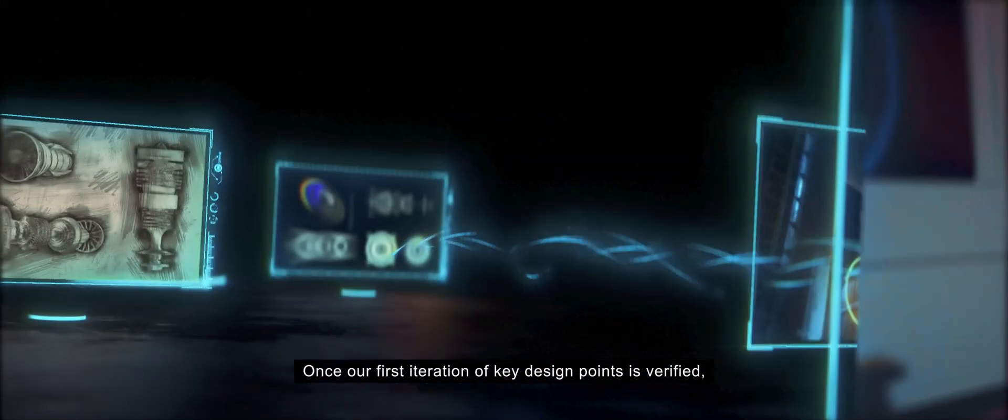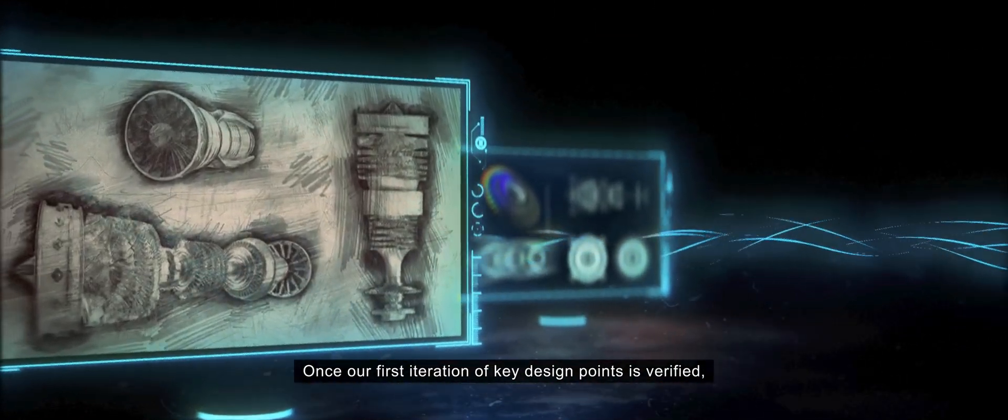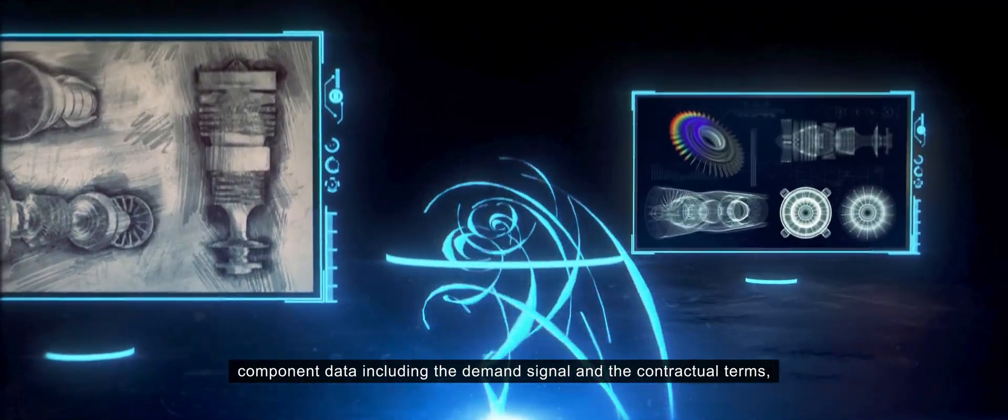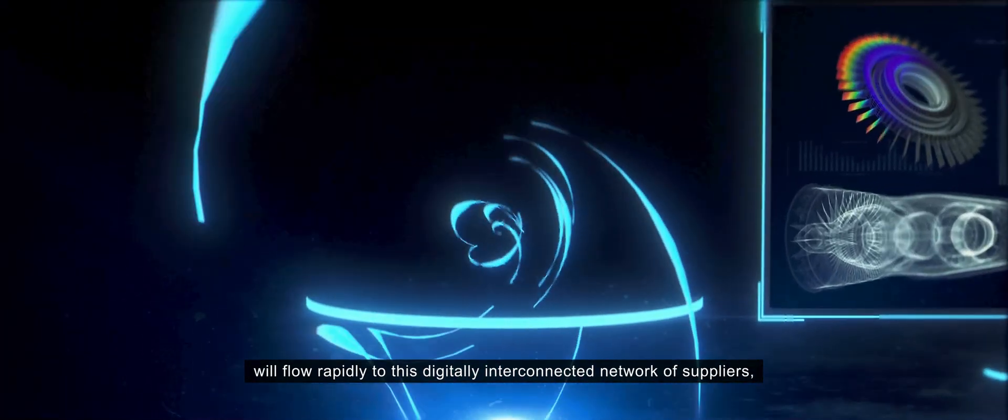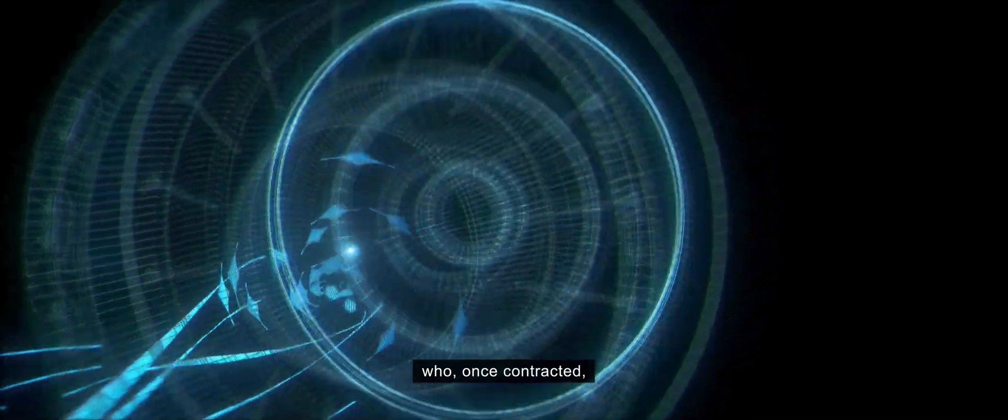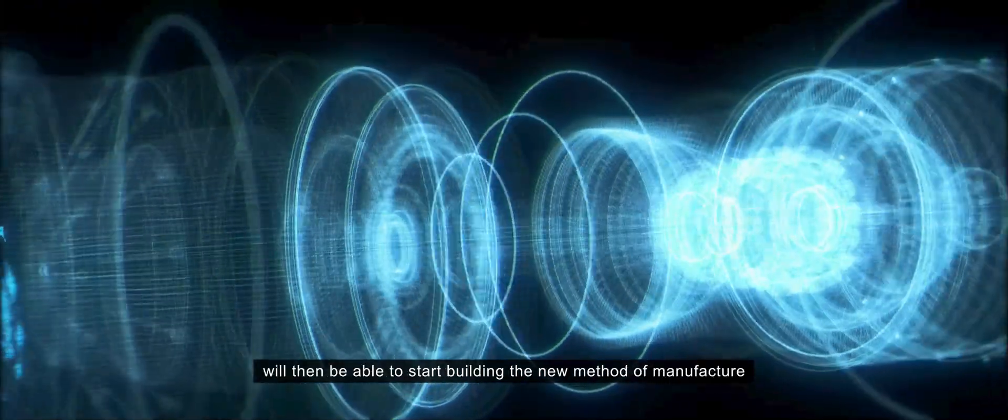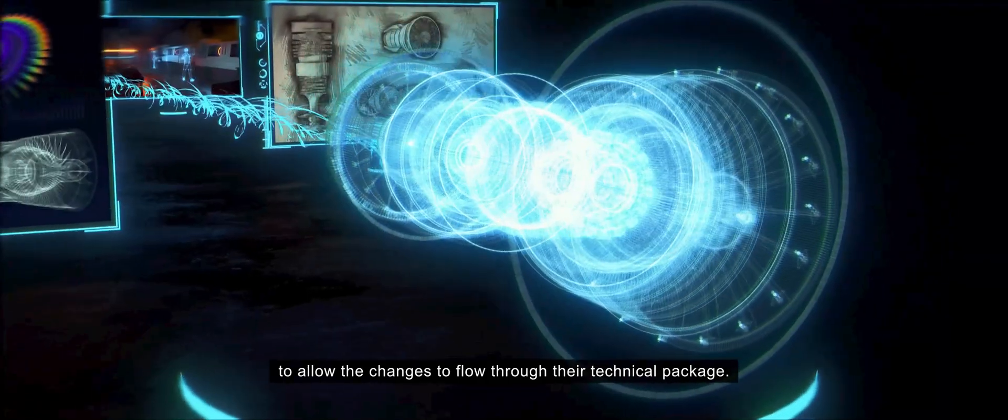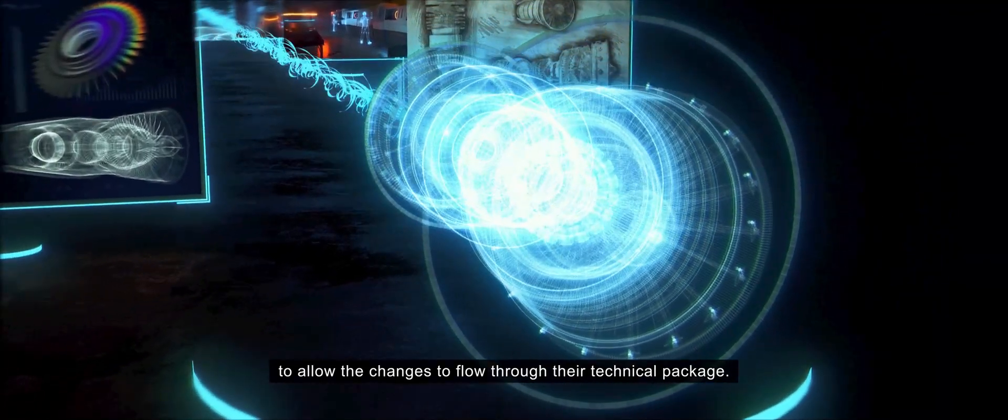Once our first iteration of key design points is verified, component data, including the demand signal and the contractual terms, will flow rapidly to this digitally interconnected network of suppliers who, once contracted, will then be able to start building the new method of manufacture to allow the changes to flow through their technical package.